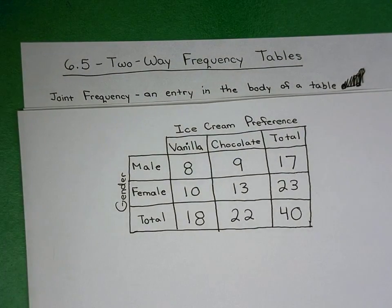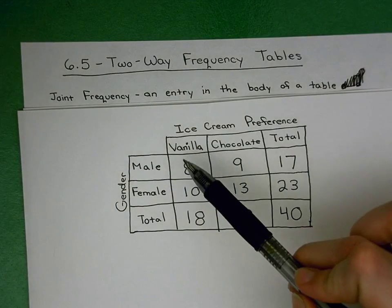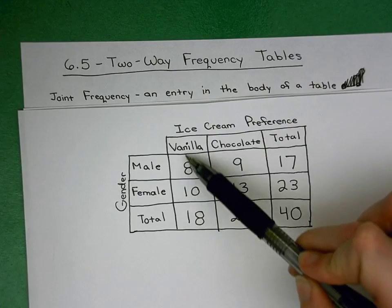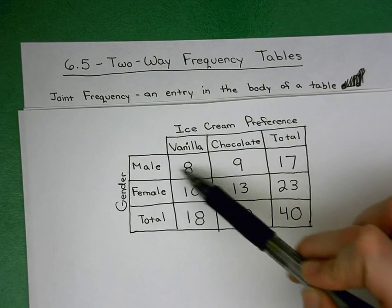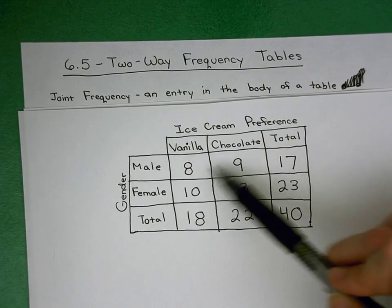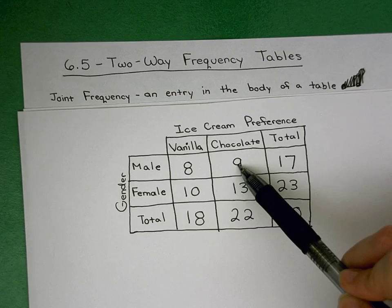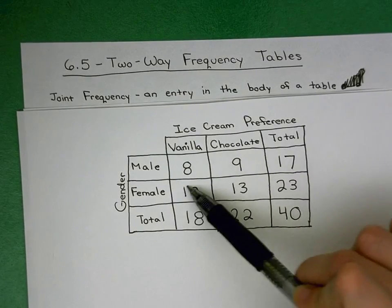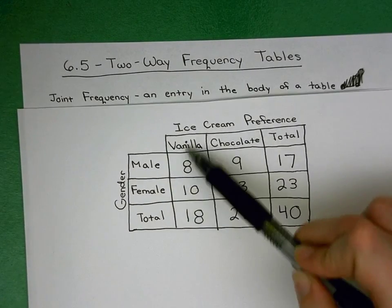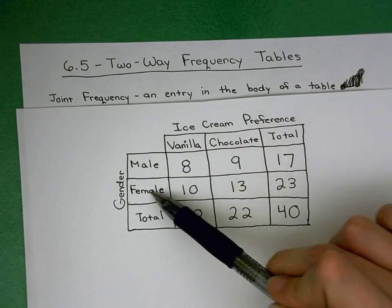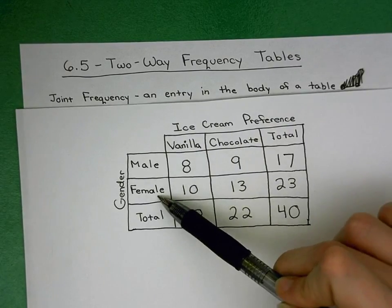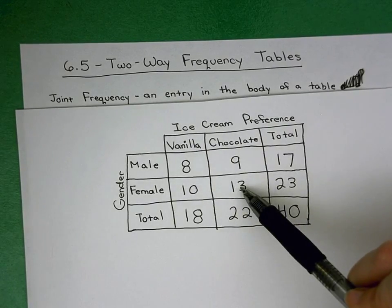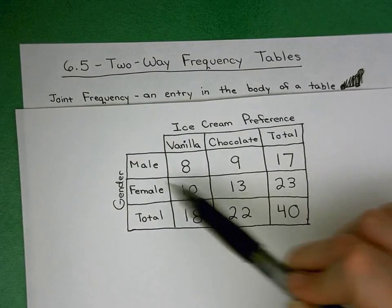So a joint frequency — for example, we could be asked for the joint frequency of vanilla and male. The joint frequency of vanilla and male would be eight. Nine is the joint frequency of male and chocolate. Ten is the joint frequency of female and vanilla, and thirteen is the joint frequency of female and chocolate.